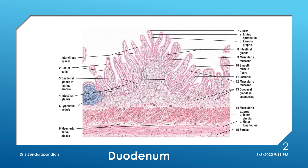Another projection you can make out here — this includes submucosa also — is called plica circularis. That is the permanent mucosal fold present in the small intestine that increases the surface area. So the modifications in small intestine to increase surface area are: plica circularis and the surface projections called villi.